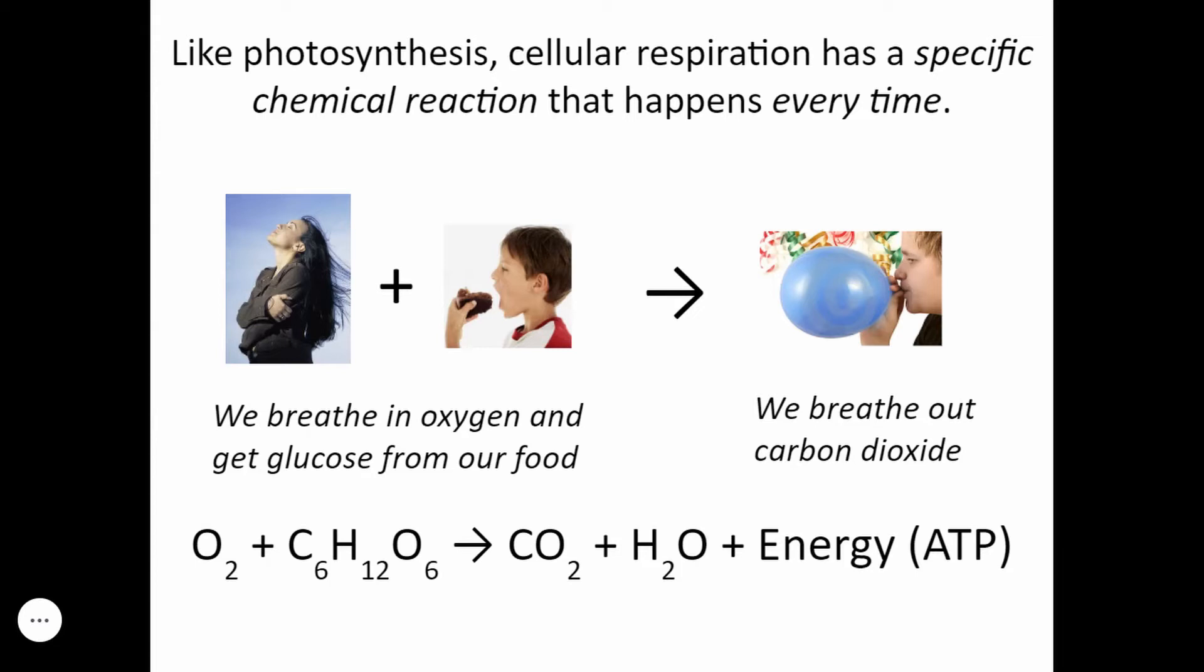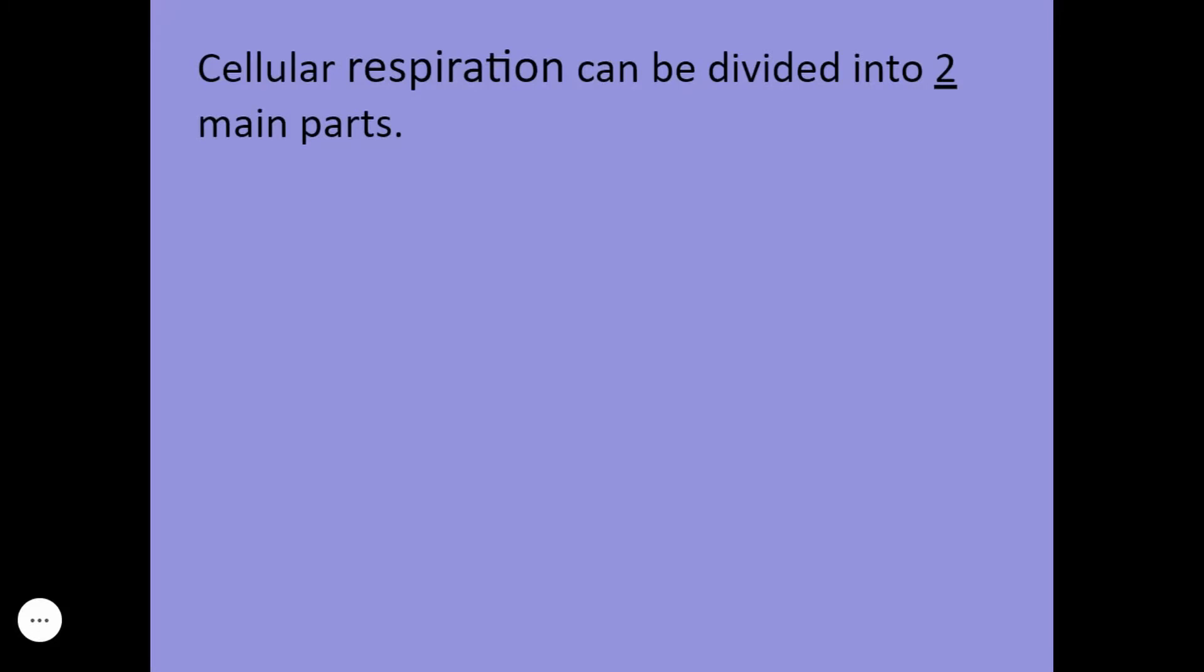This is actually the opposite of photosynthesis, right? So photosynthesis is carbon dioxide plus water in the presence of light yields oxygen and glucose. Whereas this reaction is oxygen and glucose yields carbon dioxide plus water plus energy. And in this case, the energy is not light. It's ATP.